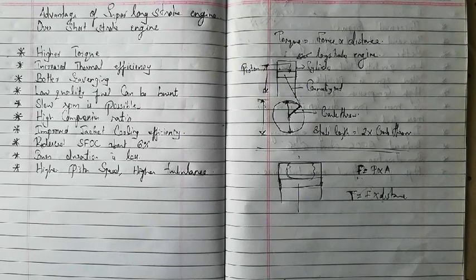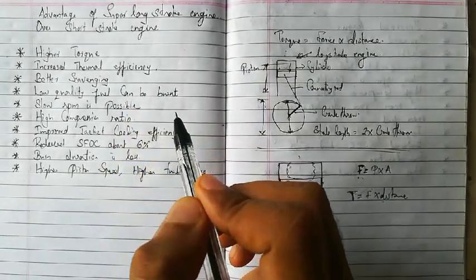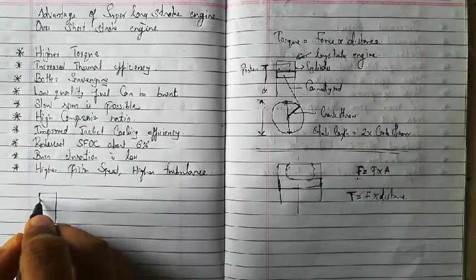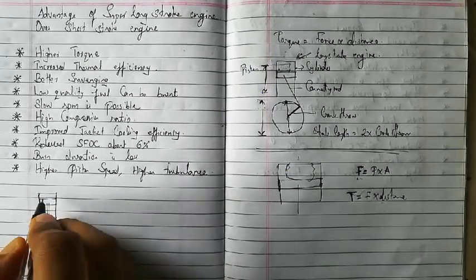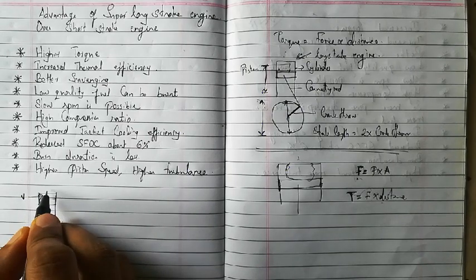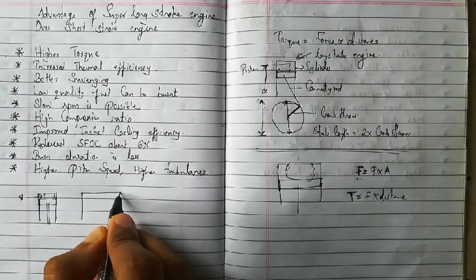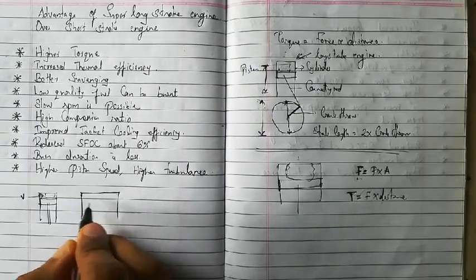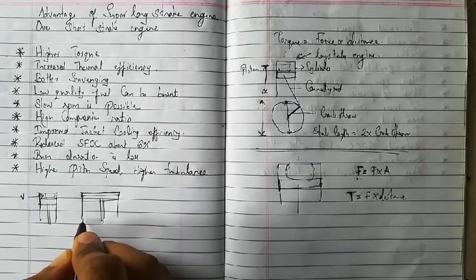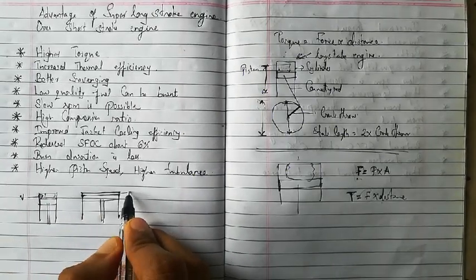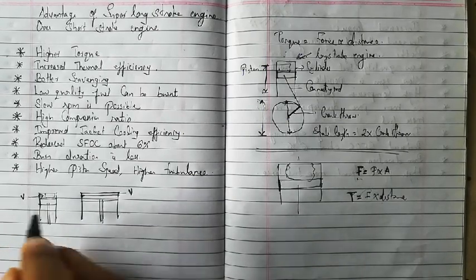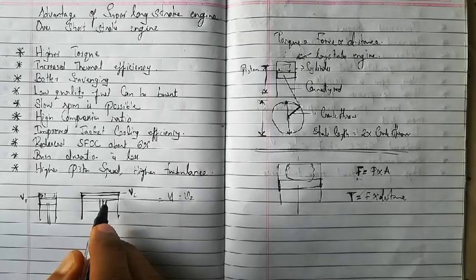The second advantage is increased thermal efficiency. Consider a long stroke engine piston where compression is happening. The combustion chamber volume is kept constant at V. Now compare this with a larger bore, short stroke piston — the combustion chamber volume V1 and V2 remain equal, but the short stroke engine has more surface area and less height in the combustion zone.